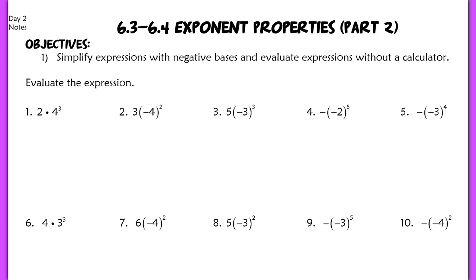In number one, we're finding the product of 2 and 4³. I want to keep the 2 here and evaluate 4³. Four to the third is 64. So I'm finding 2 times 64, which gives me 128.